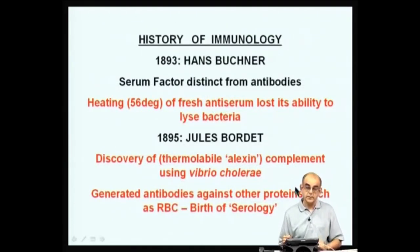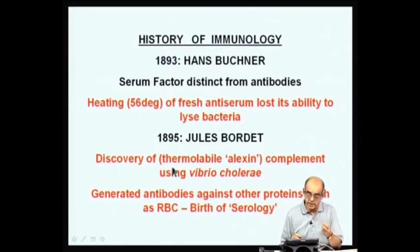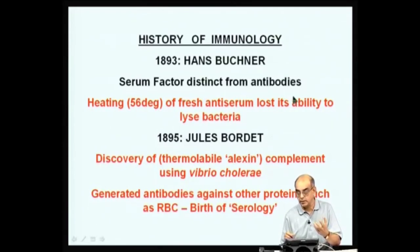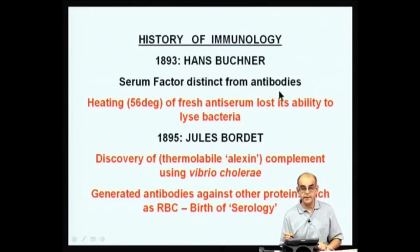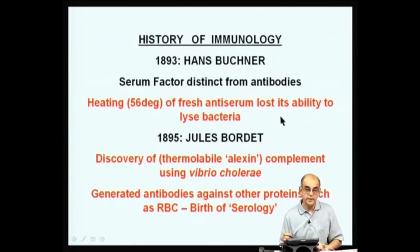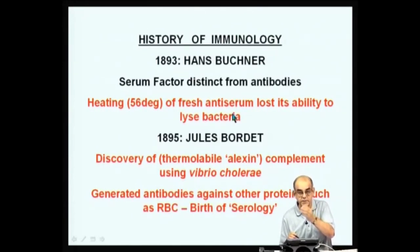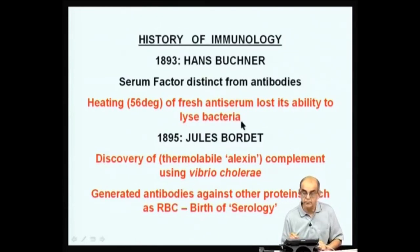Going on with the history of immunology — in 1893, Hans Buchner said that there is something else in the serum, very distinct from antibodies, which had the ability to lyse bacteria. He found this out by taking serum from naive animals — those not exposed to that particular antigen or bacteria — and when he mixed that serum along with the bacteria and with the resistant serum, he found that this naive serum had the ability to increase the lysis of that bacteria.